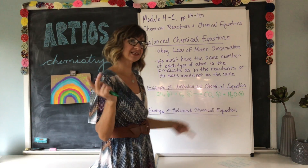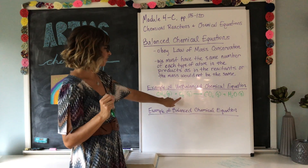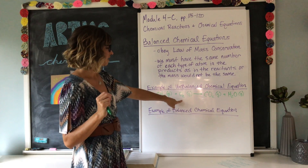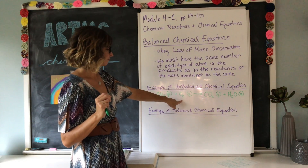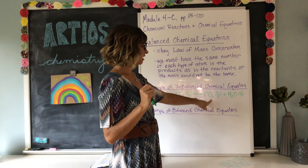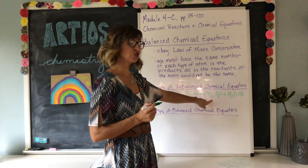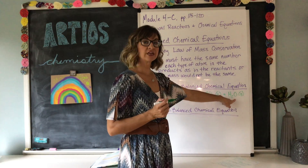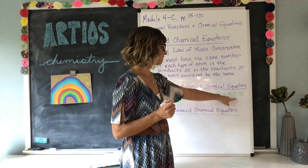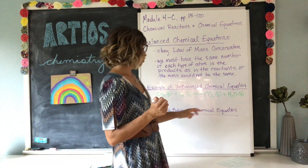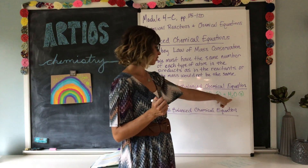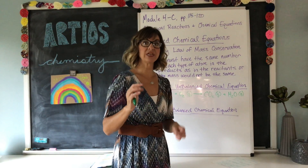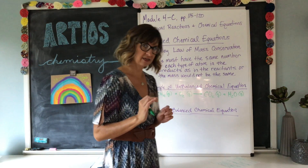Let's take a look at the other elements. For oxygen, we begin with two oxygen atoms. In our products, we end up with two in the CO2 molecule and one oxygen in H2O. So we started with two and we ended up with three oxygen atoms — that cannot happen. So we need to do something to balance it.